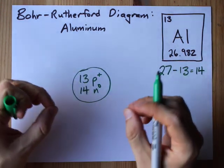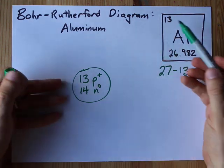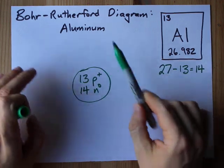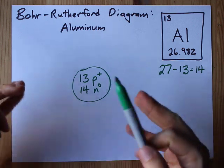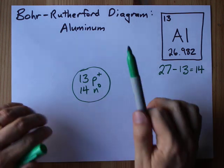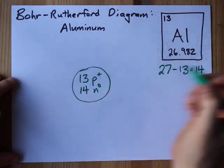But Bohr-Rutherford diagrams are all about the electrons. You're probably going to need the same number of electrons as you had of protons. The only exception to that is if your teacher tells you there's a charge on this atom, like if they tell you that this is aluminum 3+. If they don't mention it, it's the same number because it's a neutral atom. I need 13 electrons here.